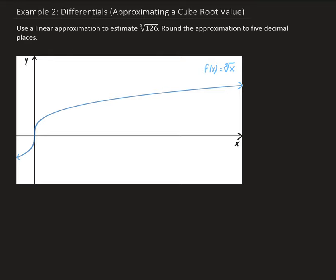In this example, we want to use a linear approximation to estimate the cube root of 126, and then we also want to round that approximation to five decimal places.